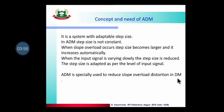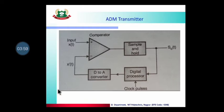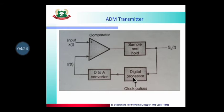The step size is adapted as per the level of the input signal. ADM is specially used to reduce slope overload distortion in Delta Modulation. If you compare the Delta Modulation transmitter and the ADM transmitter, both diagrams are essentially the same — except that instead of an up-down counter in Delta Modulation, ADM uses a special digital processor circuit that automatically calculates whether the slope needs to increase or decrease, and by how much.